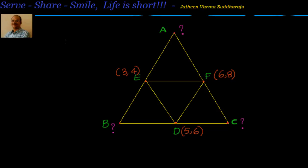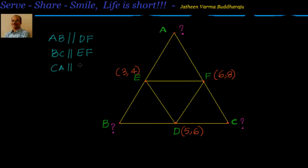From this theorem, we know that AB is parallel to DF, BC is parallel to EF, and CA is parallel to DE. This follows because joining the midpoints of two sides of a triangle gives a segment parallel to the third side, which we can also prove using congruency and similarity.